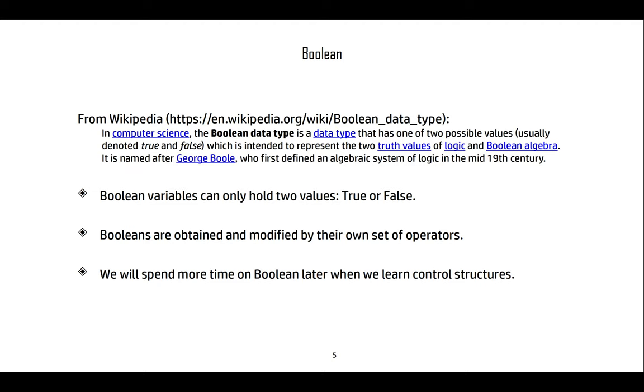So just in passing, Boolean values. This is the Boolean data type, which is basically two possible values, true or false. It's intended to represent truth values in logic and Boolean algebra. Boolean algebra comes from George Boole, who defined the system in the 19th century. Boolean variables can hold two values, true or false. They're obtained and modified by their own sets of operators, which we will see in a later lecture. We'll spend more time on this later when we learn control structures.